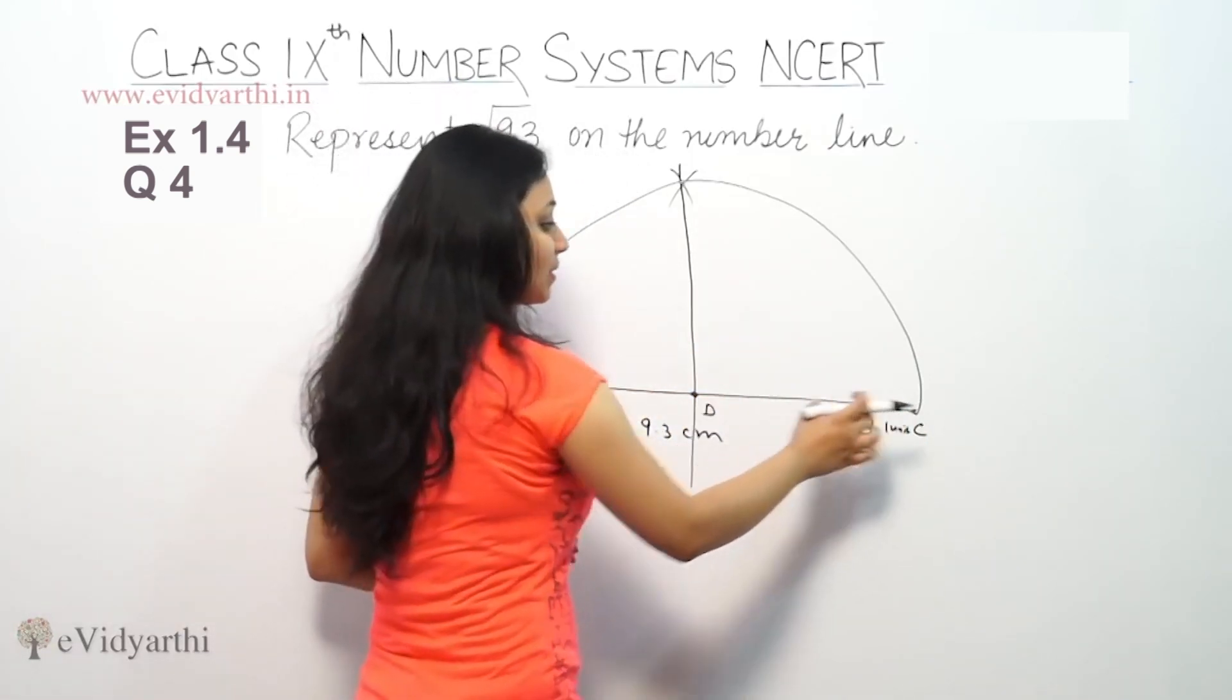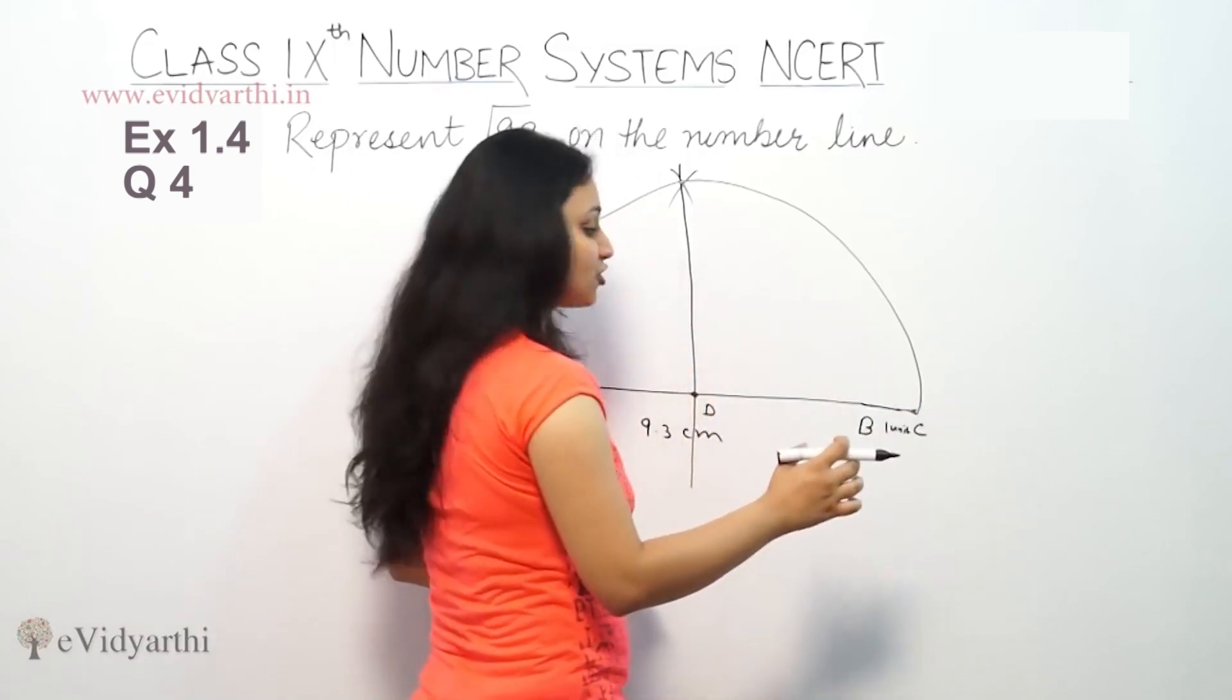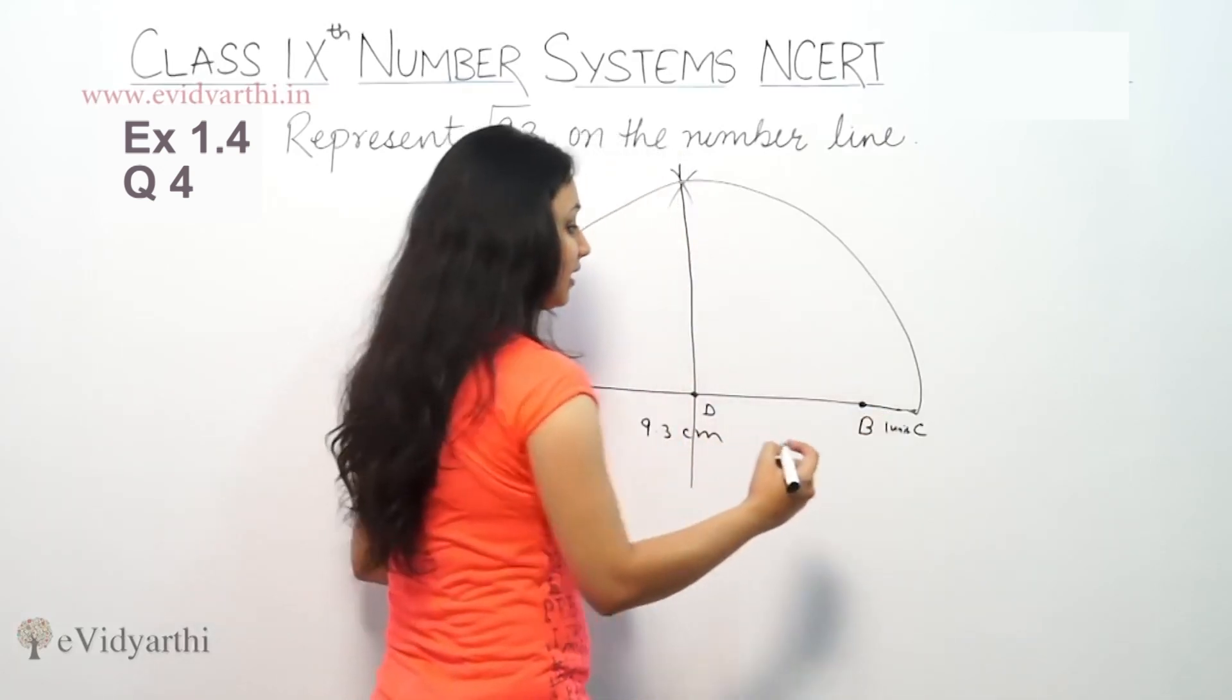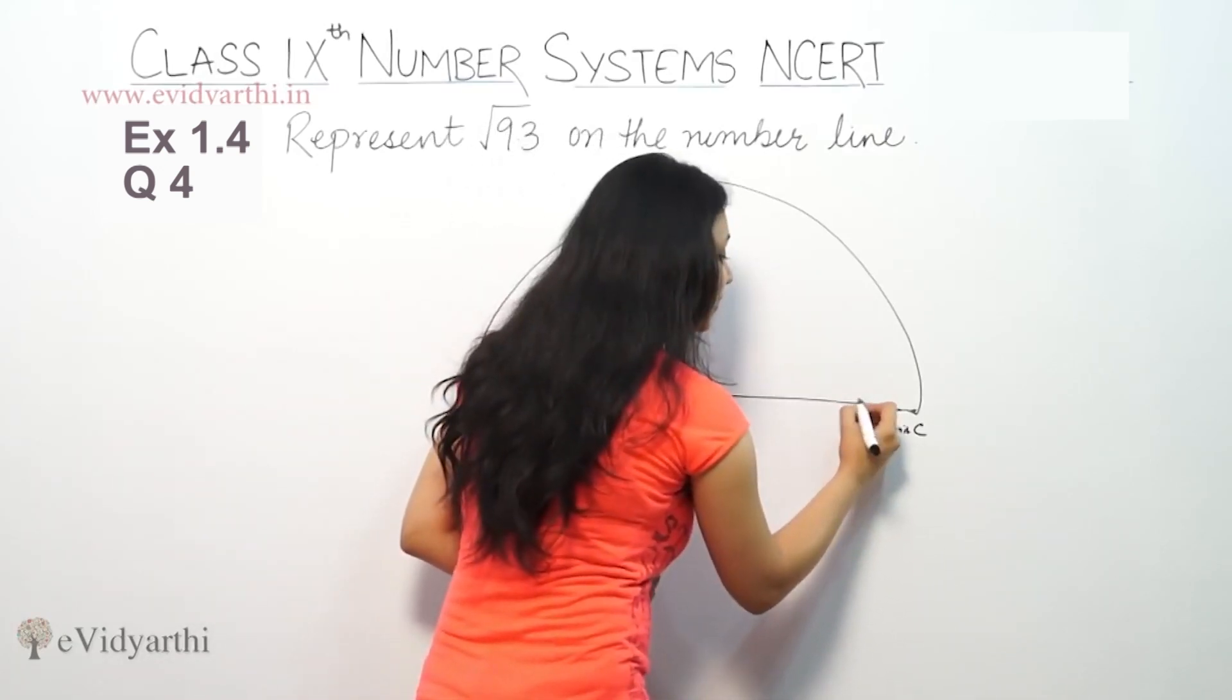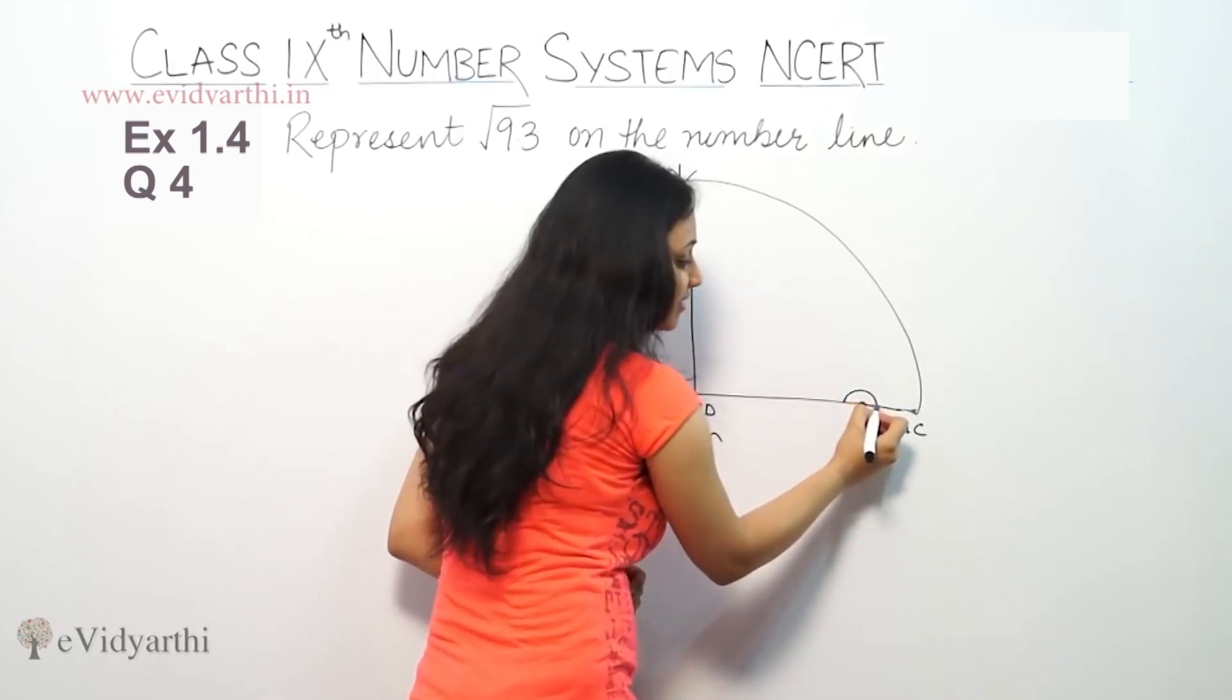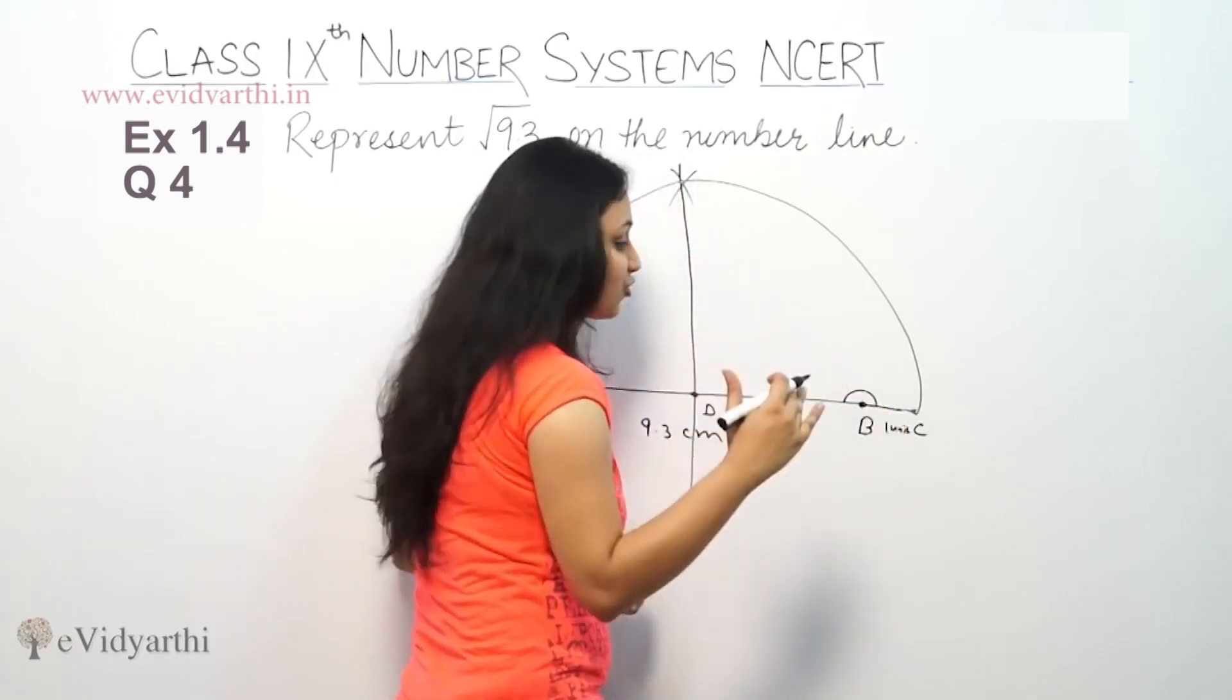After this, after drawing the semi-circle, placing at point B, we will draw a perpendicular bisector. To make a perpendicular bisector, place the compass here. From here you will draw a semi-circle this way. Draw a ninety degree angle.